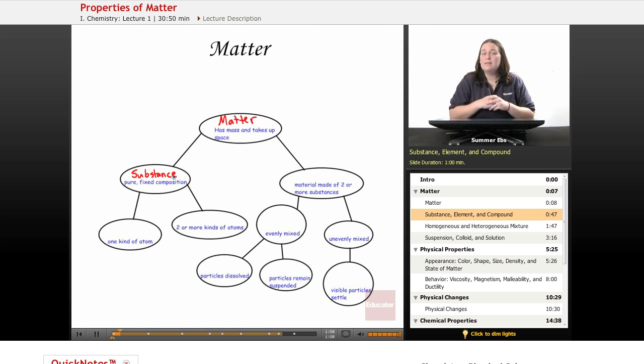There's two types of substances that we'll look at. One is an element. So an element is a substance that's made up of one kind of atom. A substance that's made up of two or more kinds of atoms is called a compound. So those are very simple definitions of elements and compounds.